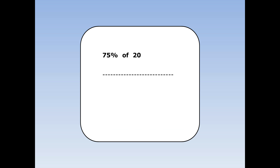Find 75% of 20. 75% is the same as three quarters. To find three quarters, I divide by four and times by three. 20 divided by four is five. 5 times three is 15.